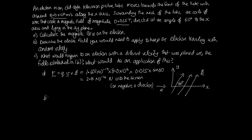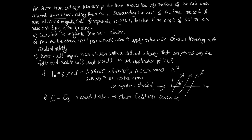For Part B, we apply an electric field to keep the electron traveling in a straight line. The magnetic force must be equal and opposite to the electric force. So we need an electric force to push the electron out of the screen towards us. Since electric fields describe the direction of force on a positive particle, we need an electric field directed into the screen, in the negative z direction.